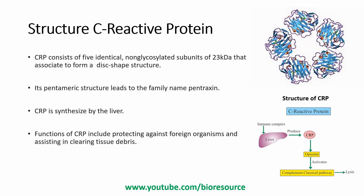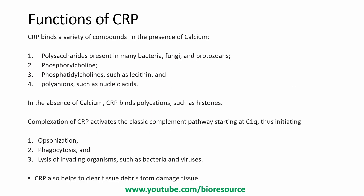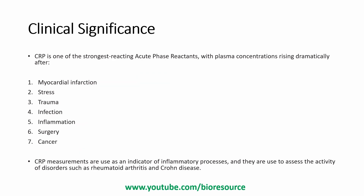CRP is synthesized by the liver. Its functions include protecting against foreign organisms and assisting in clearing tissue debris. The immune response can trigger the liver to produce CRP, which can activate the complement pathway. CRP binds a variety of compounds in the presence of calcium, including polysaccharides present in many bacteria, fungi, and protozoans; phosphorylcholine; phosphatidylcholine such as lecithin; and polyanions such as nucleic acids. In the absence of calcium, CRP binds polycations such as histones. The complexing of CRP activates the classical complement pathway starting at C1q, initiating opsonization, phagocytosis, and lysis of invading organisms such as bacteria and viruses.